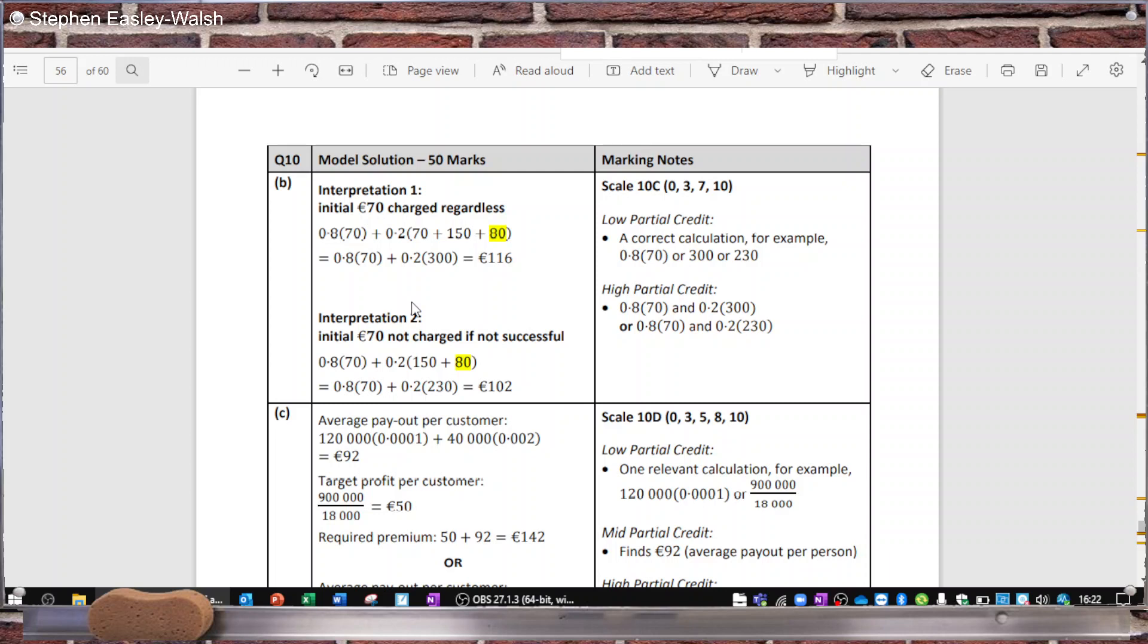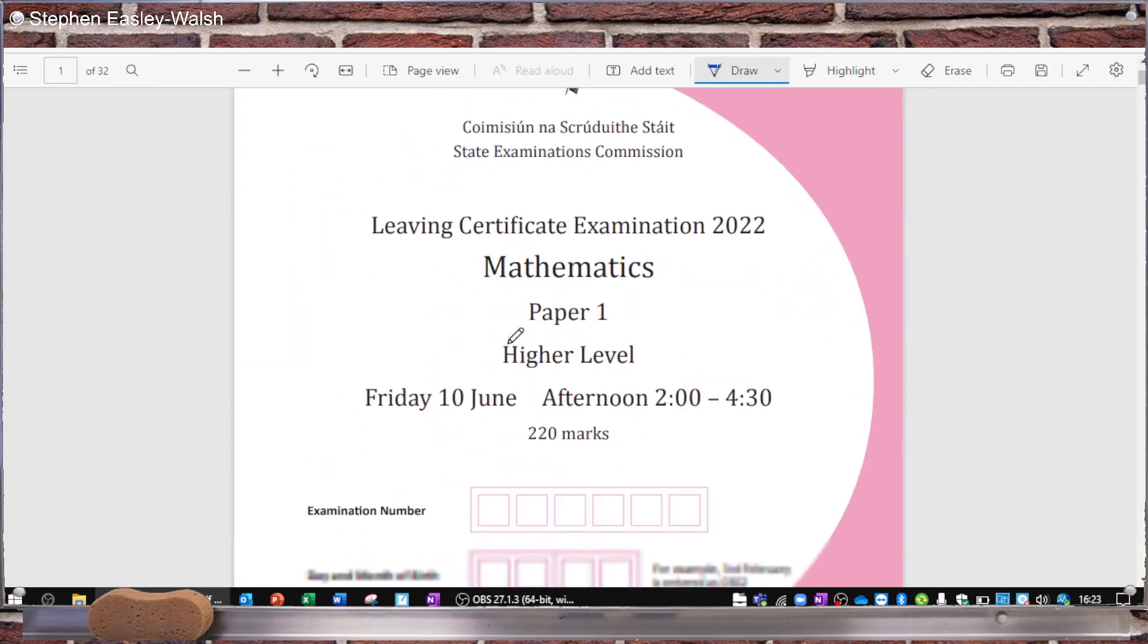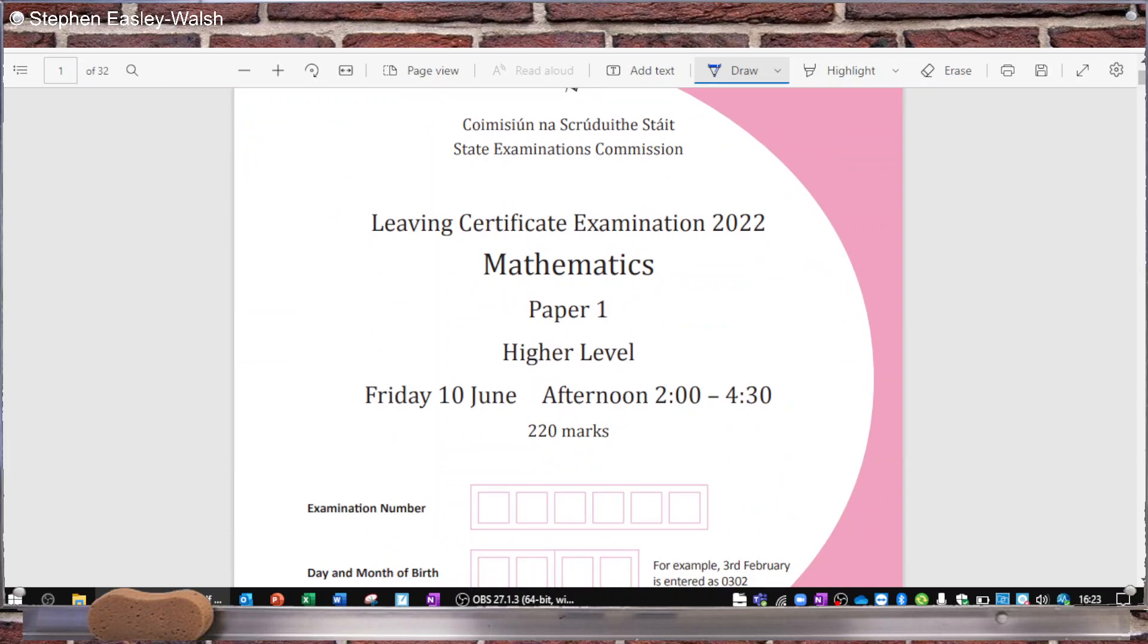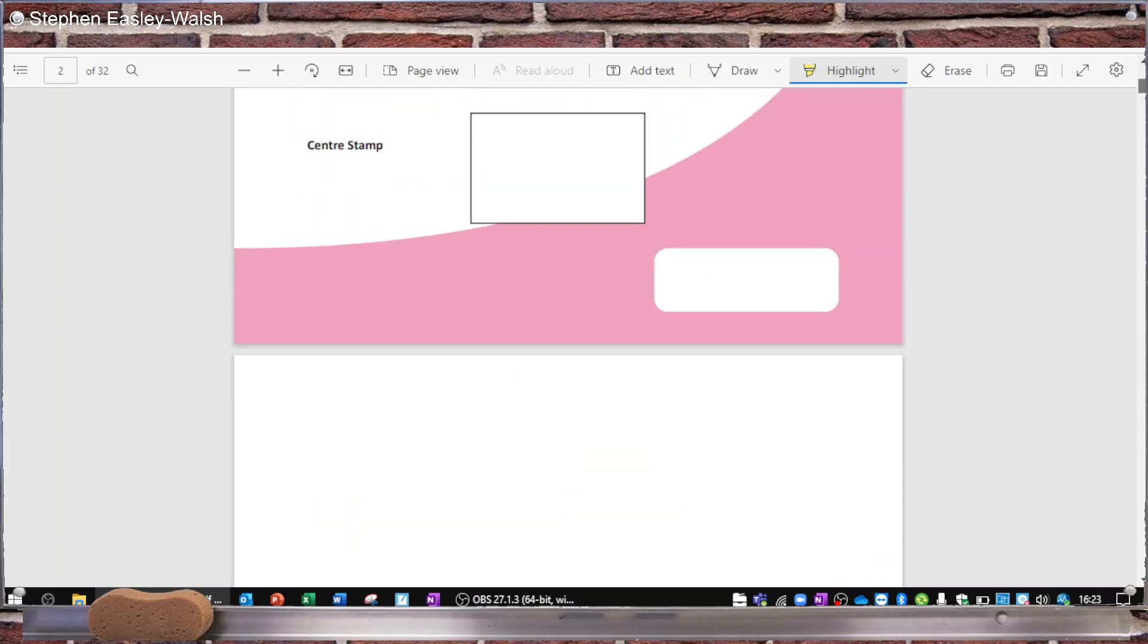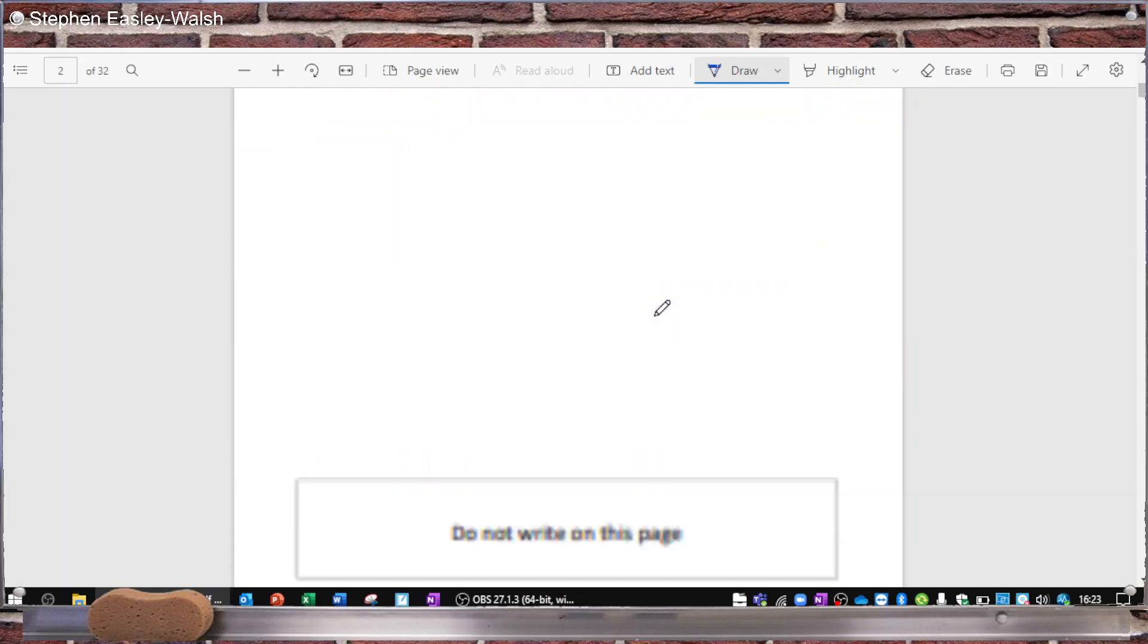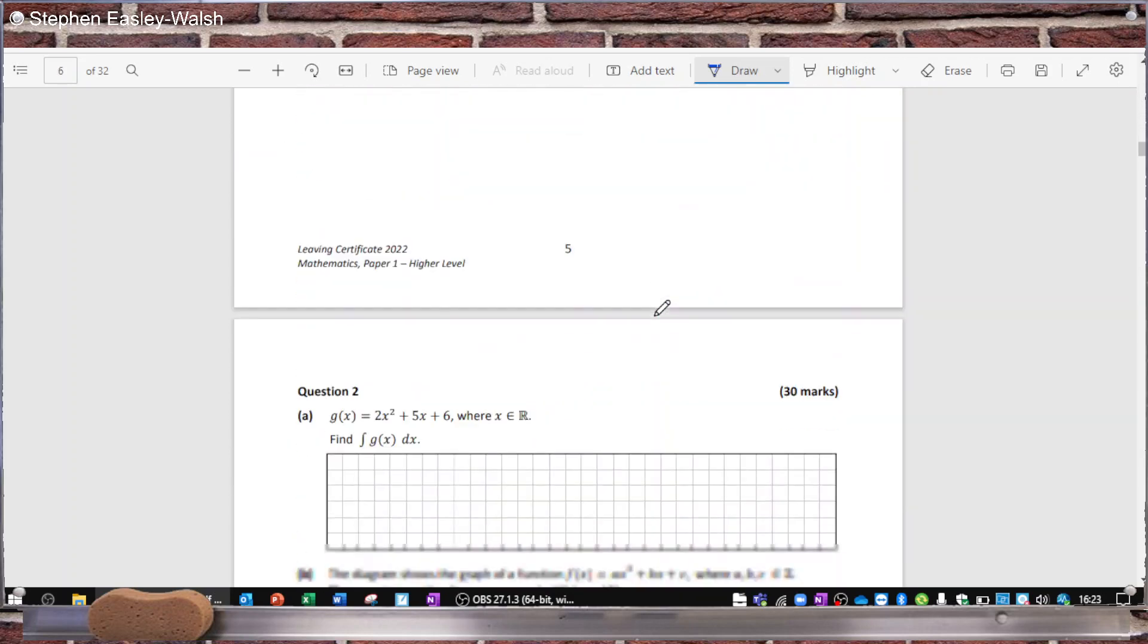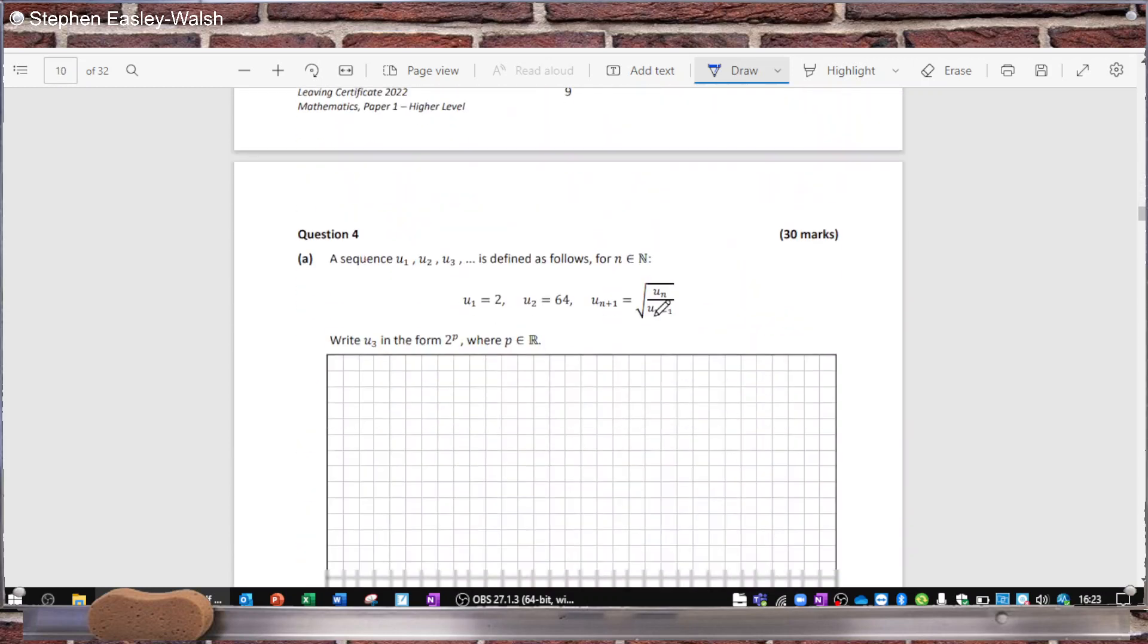So it got me thinking about what could be in this exam that is also going to have more than one answer or problems in the marking scheme. I started with Paper 1 and I could find three things in Paper 1 that I think they'll have to correct in the marking scheme. I couldn't find anything in Paper 2, I think Paper 2 is okay. But I want to point out the three things in Paper 1 that I found.